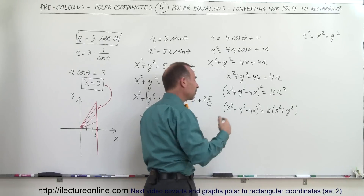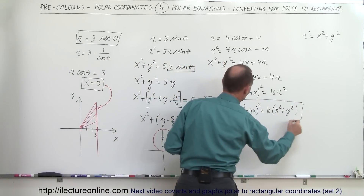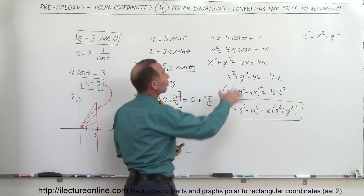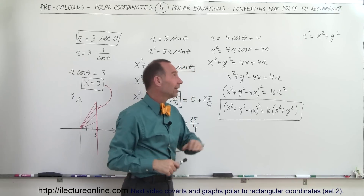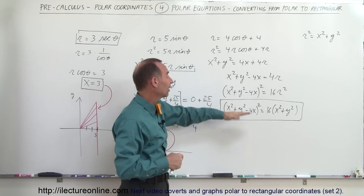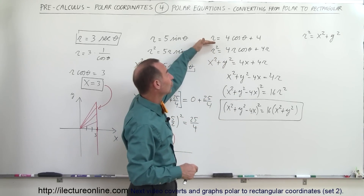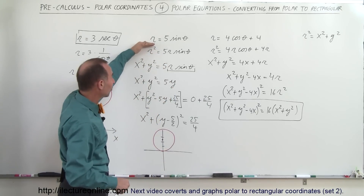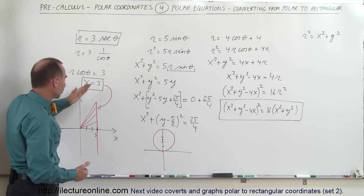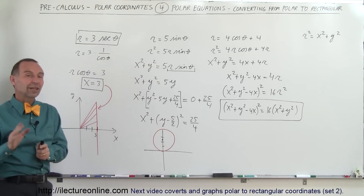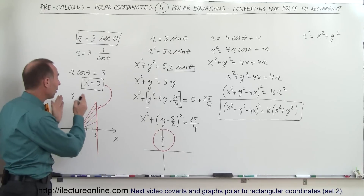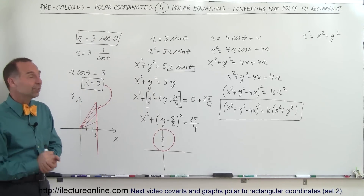You could algebraically manipulate that in many ways, but this is a nice relationship between x and y, and we don't need to solve for either variable — we can leave it like this. Notice that the polar equation is much simpler than this rectangular form. Sometimes graphs are much more easily represented in polar coordinates than in rectangular. Conversely, a simple vertical line like x equals 3 is complicated in polar. That's why it's necessary to go back and forth — in some cases polar is easier, in others rectangular is easier, and that's how we do the conversion.